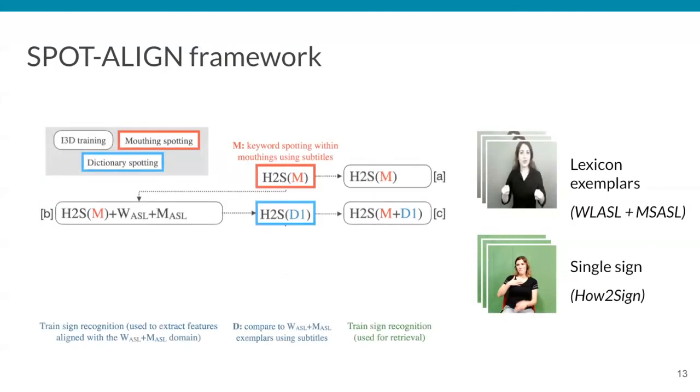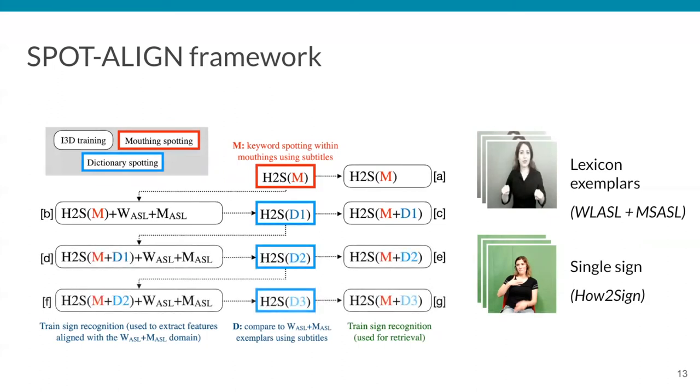To improve that, we propose the Retrain and Require framework that is designed to improve the feature alignment between both video domains. We increase the amount of dictionary-based annotations by retraining our sign video embeddings and requerying the dictionary exemplars.